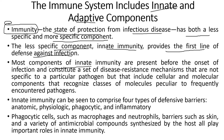Most components of innate immunity are present before the onset of infection and constitute a set of disease-resistant mechanisms that are not specific to a particular pathogen, but include cellular and molecular components that recognize classes of molecules peculiar to frequently encountered pathogens. These anti-pathogenic mechanisms are built into our body whether we are infected or not. Whenever an infection arises, innate immunity is the first line of defense that reacts to and destroys that particular pathogen.